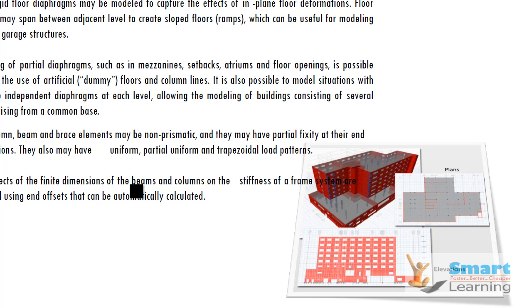By default it will fix the column ends, but you can configure that. Different types of load configurations other than uniform — such as varying loads, partial uniform loads, trapezoidal load patterns, or other load types — can be directly configured through your load manager. Finite dimensions of beams and columns for stiffness can also be included, automatically created, and changed as per your requirement.